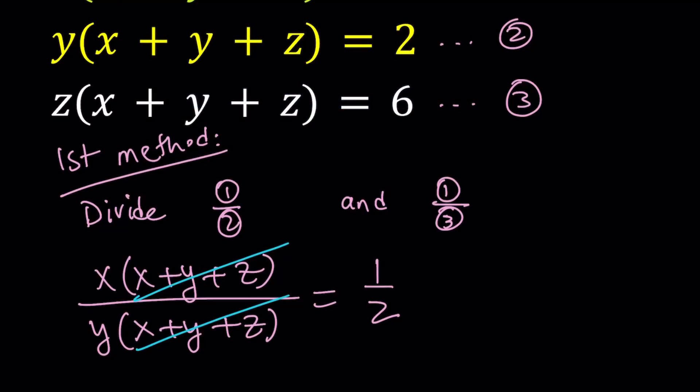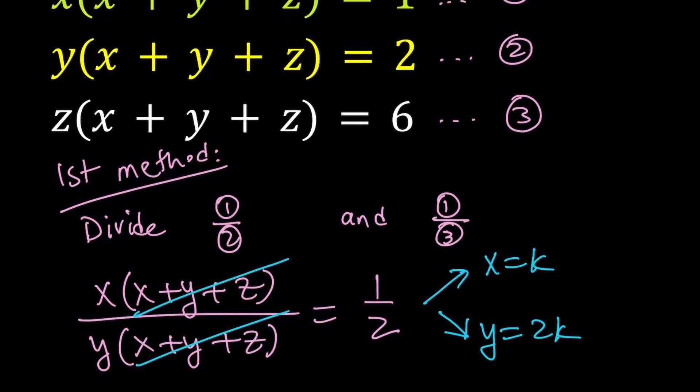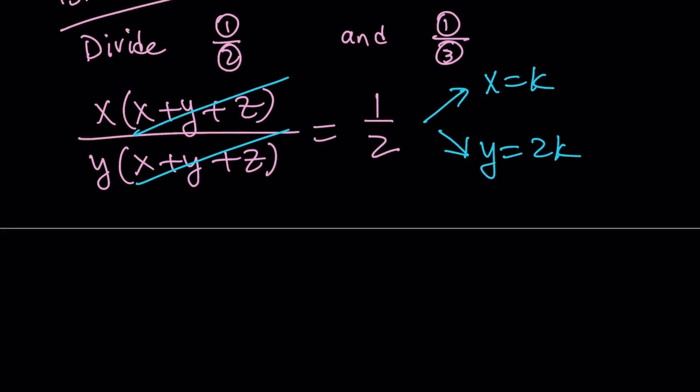So x plus y plus z does not equal zero. Let's go ahead and simplify this. Now, from here, we get x to y ratio. You can write y in terms of x or vice versa. But let's go ahead and use a different variable here and write x as k and y as 2k. So the ratio is maintained. And we're going to stick to x equals k because when we do first and third, we can use the same thing.